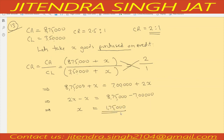So x equals 1,75,000 — this much goods has to be purchased on credit to maintain the required ratio. I hope this question is clear to everyone.